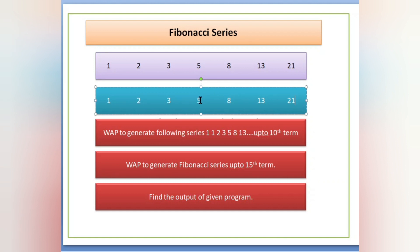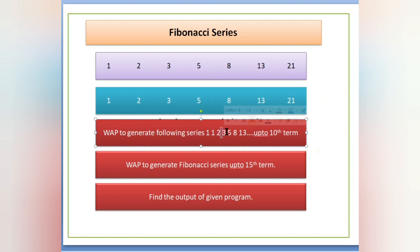In the exam, the question may ask you to generate the following series: one, one, two, three, five, eight, thirteen. Look at the pattern — the first two values are one and one, the addition of these two is the next number, that is two. Two plus one is three, three plus two is five, and so on up to the tenth term, meaning we need to print this ten times.